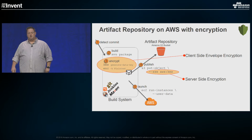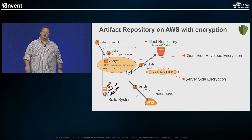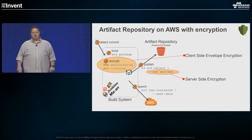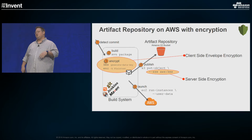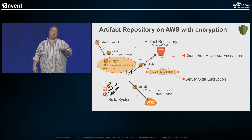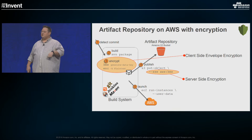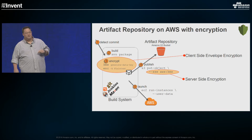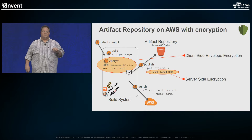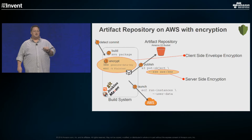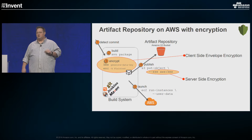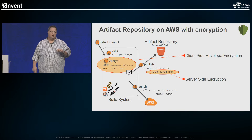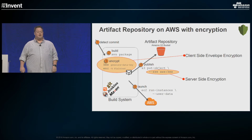We also add server-side encryption, because S3 supports it. Server-side encryption means you generate a customer-managed key in KMS and grant access to the S3 service so it can encrypt at rest on your behalf. When publishing the object to S3, we ask it to implement server-side encryption as well. Now we have both client-side and server-side encryption for that object in our S3 bucket.